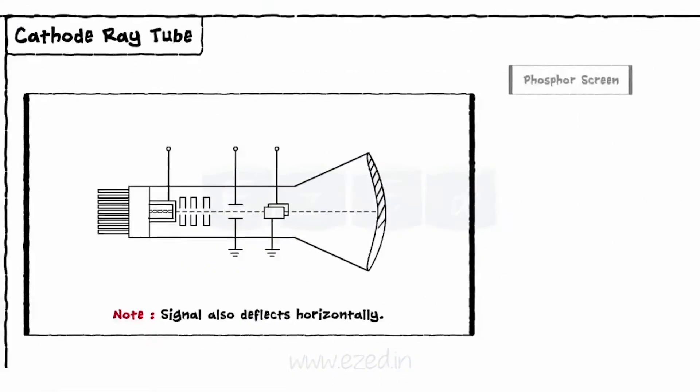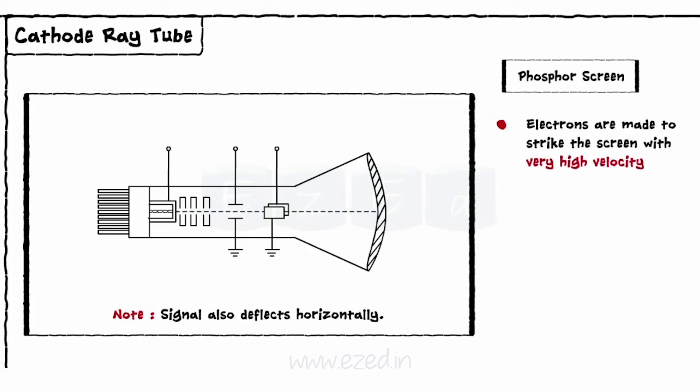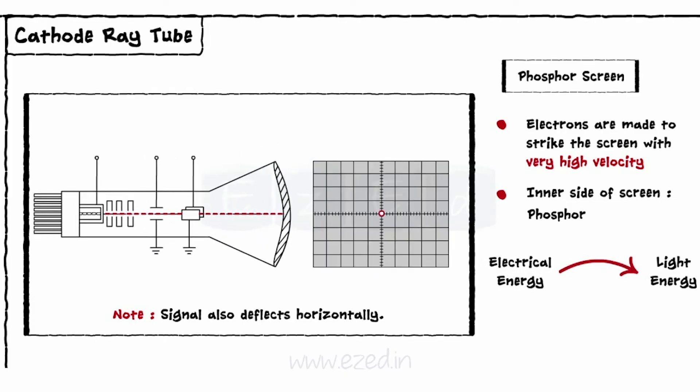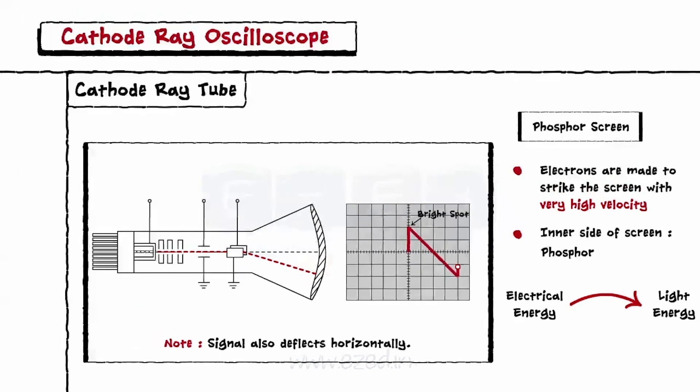The last section is the phosphor screen. The focused, accelerated and deflected beam is then made to strike the inside part of the CRO screen with a very high velocity. The inner side of the screen is coated with a special type of phosphor. This layer converts the electrical energy into light energy. Thus, whenever an electron strikes the screen with a very high velocity, it generates a bright spot on the screen and the beam moves so fast that it appears as a waveform.